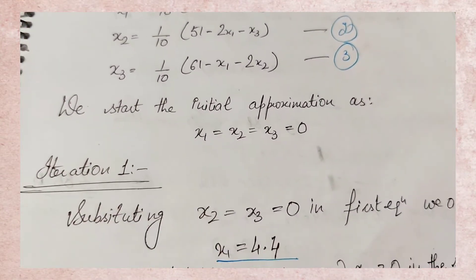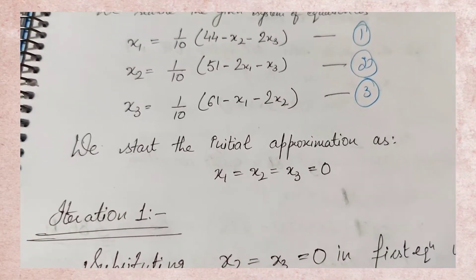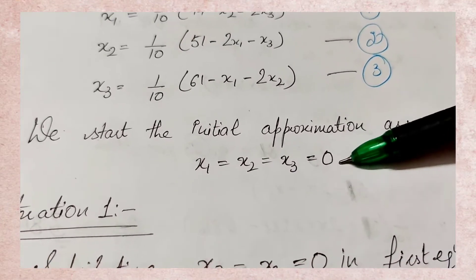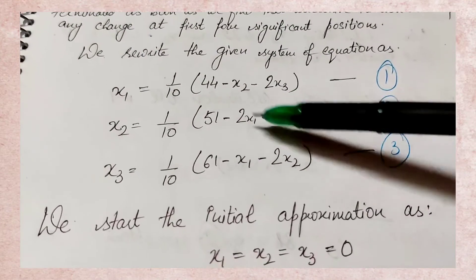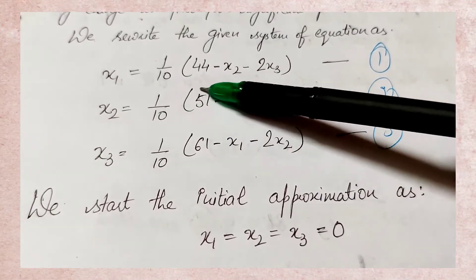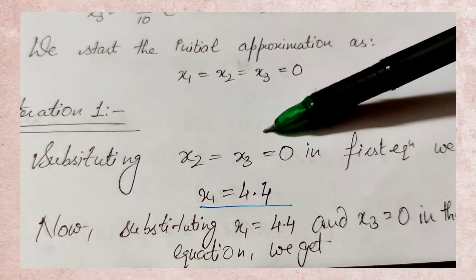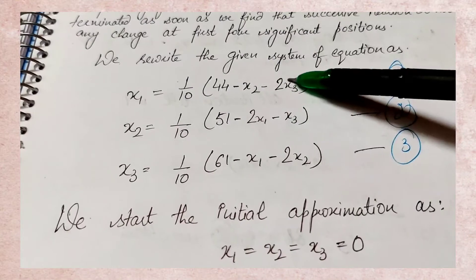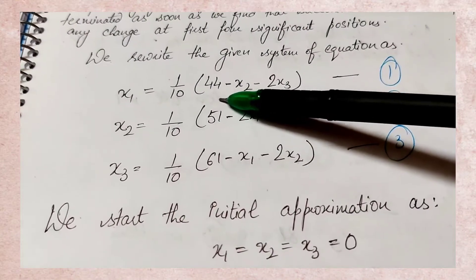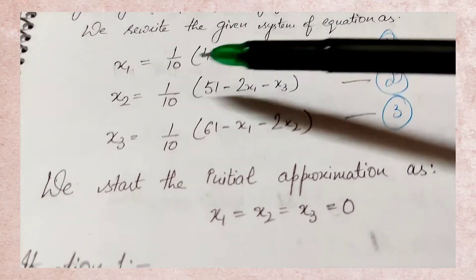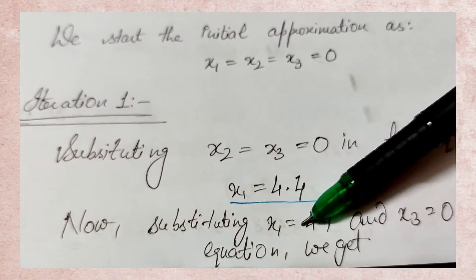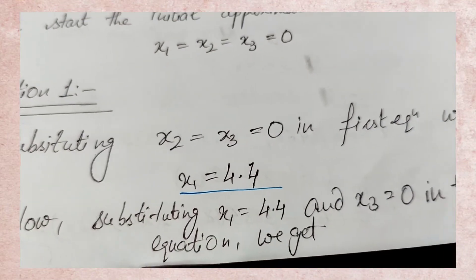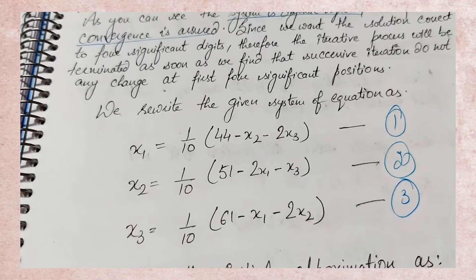So first, what did Gauss-Seidel say? You have to initialize values because no initial values are given. In the first step, we take x1 = 0, x2 = 0, x3 = 0. When finding x1 first, we use the equation and put x2 = 0 and x3 = 0, so x1 = 44/10 = 4.4. That is the first value obtained directly. After solving the first iteration, the first value is definitely 4.4, and now we put it into the second equation.